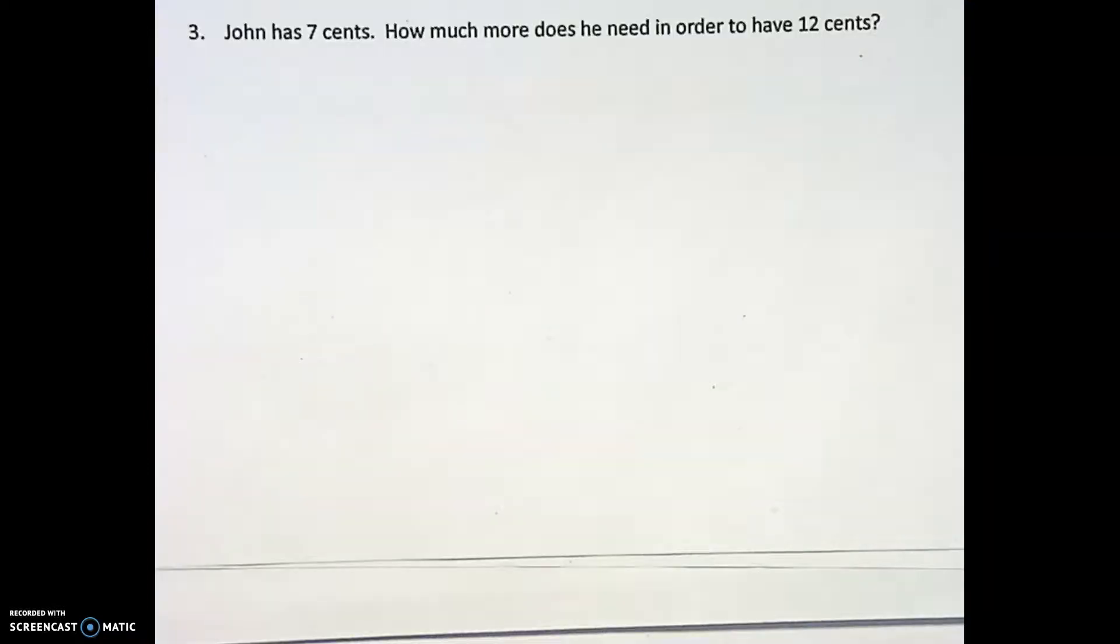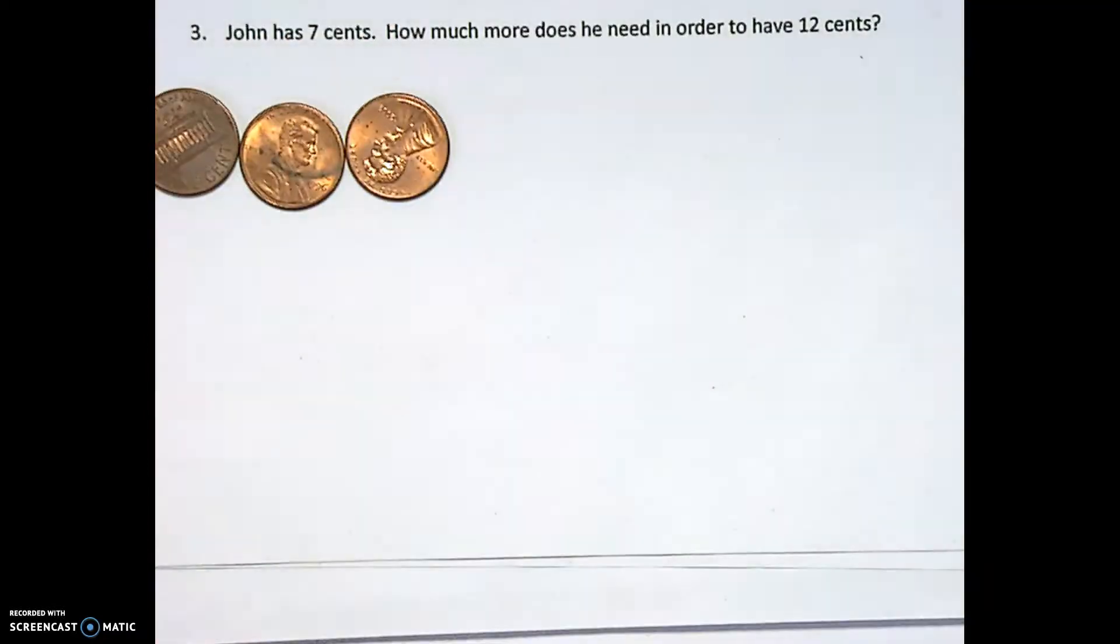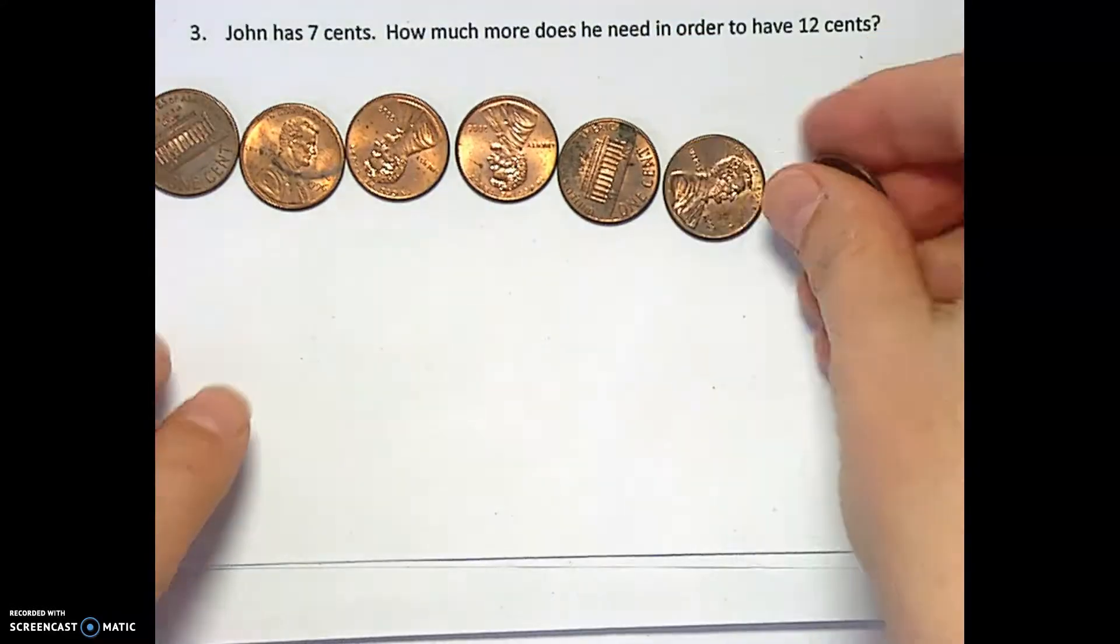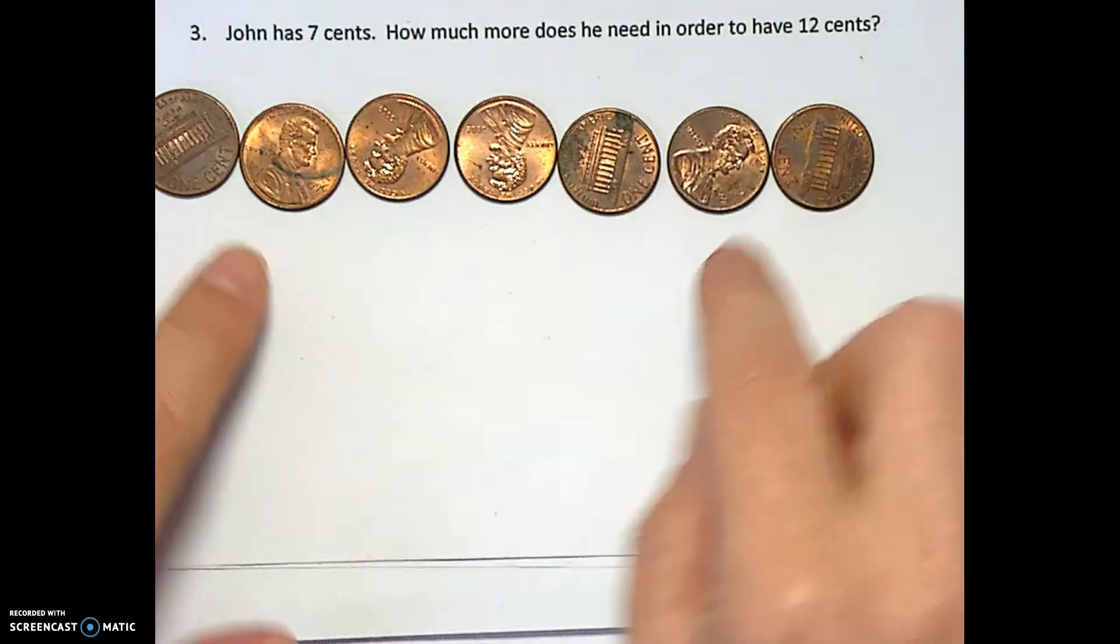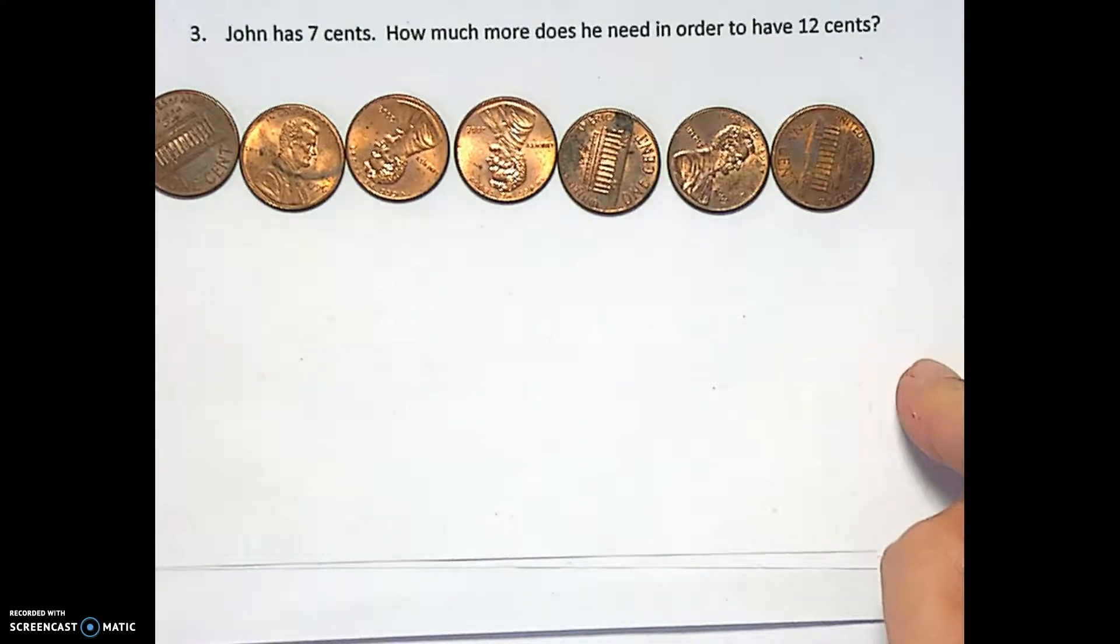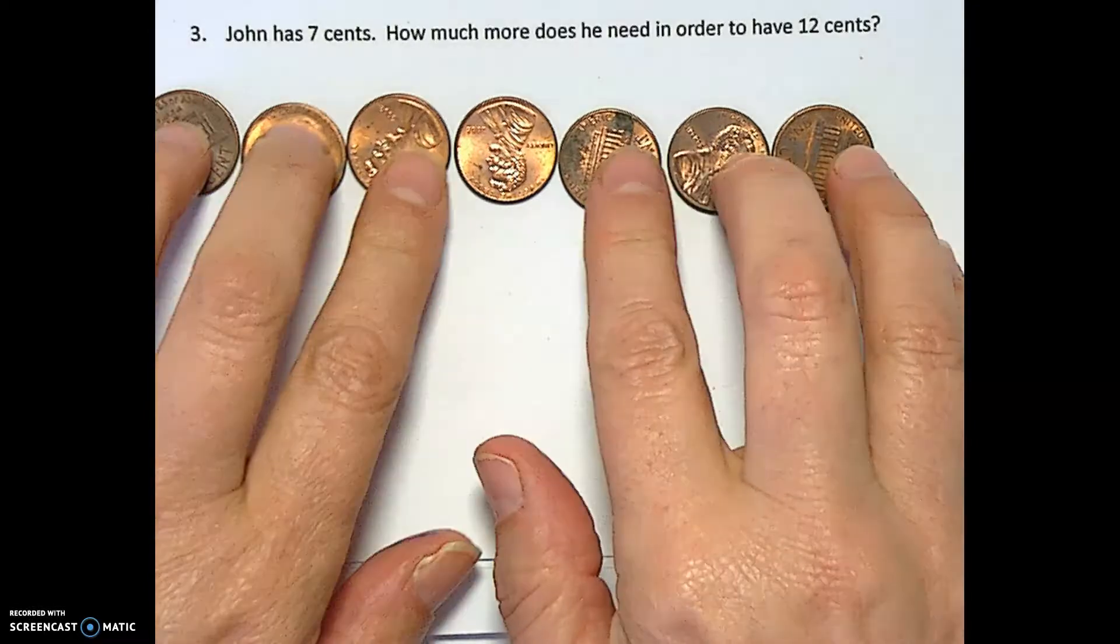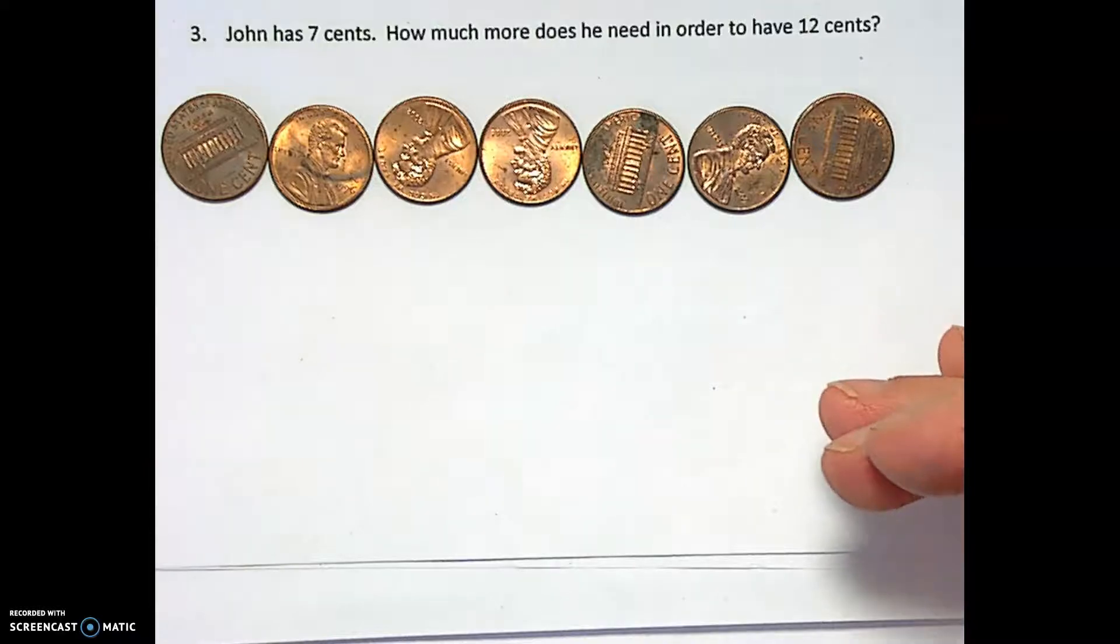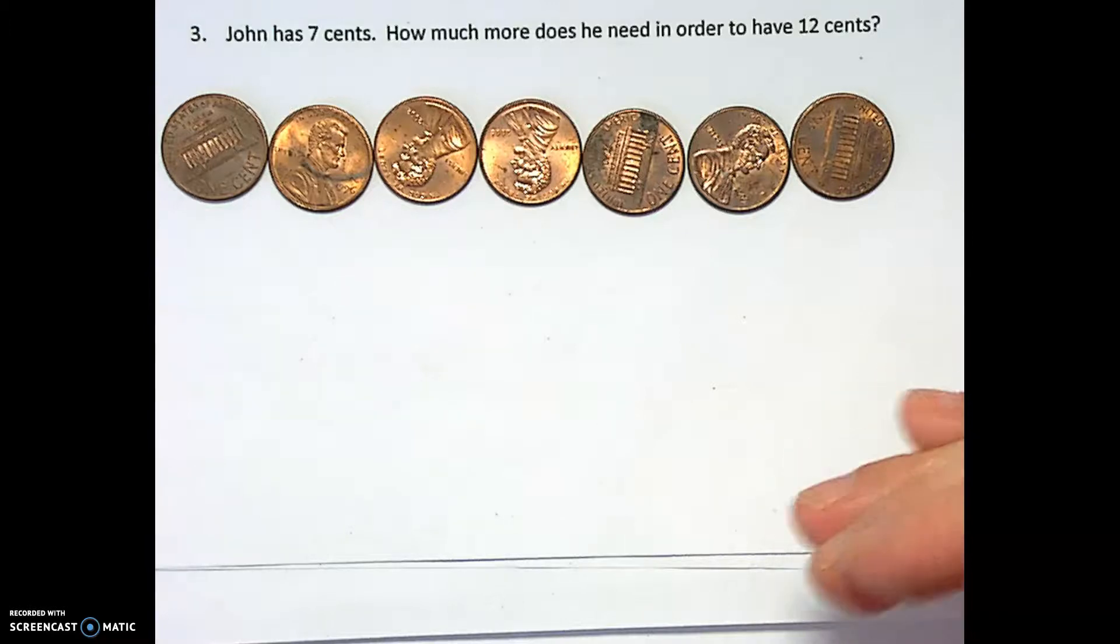In this case, John has seven cents. One, two, three, four, five, six, seven. And it asks how much more he needs to get to 12 cents. So what else do we need to add to it? This is a missing addend concept and I'll write it out in numbers in a little bit.